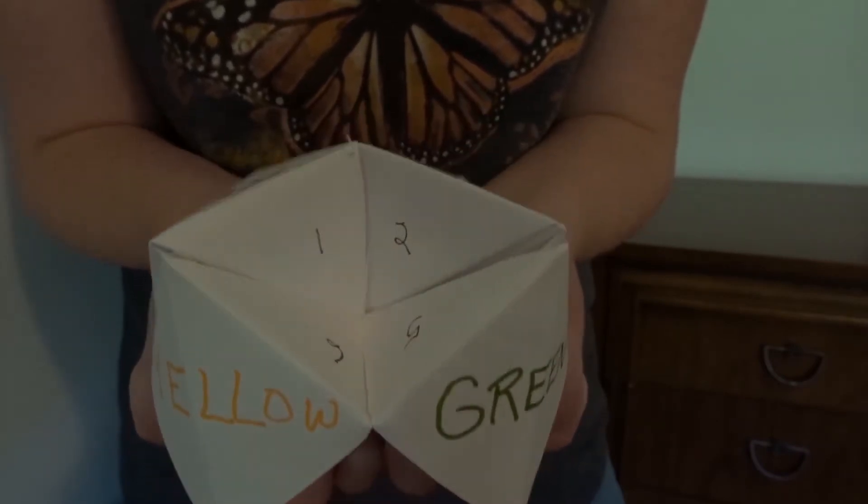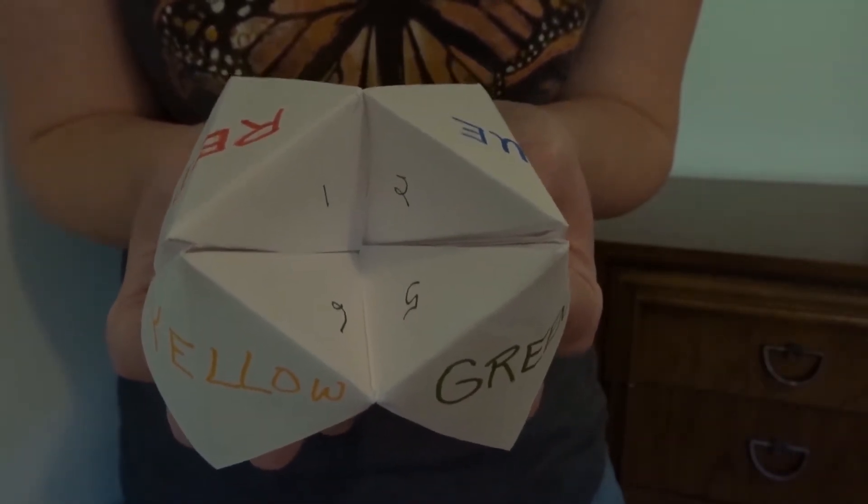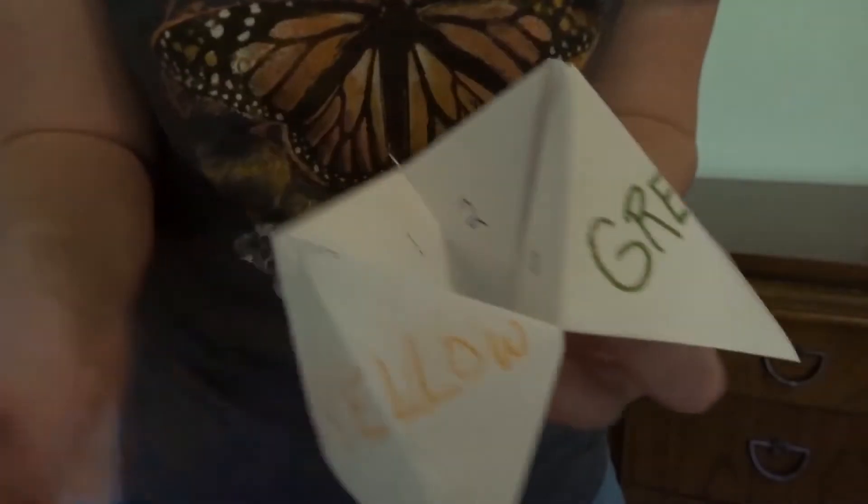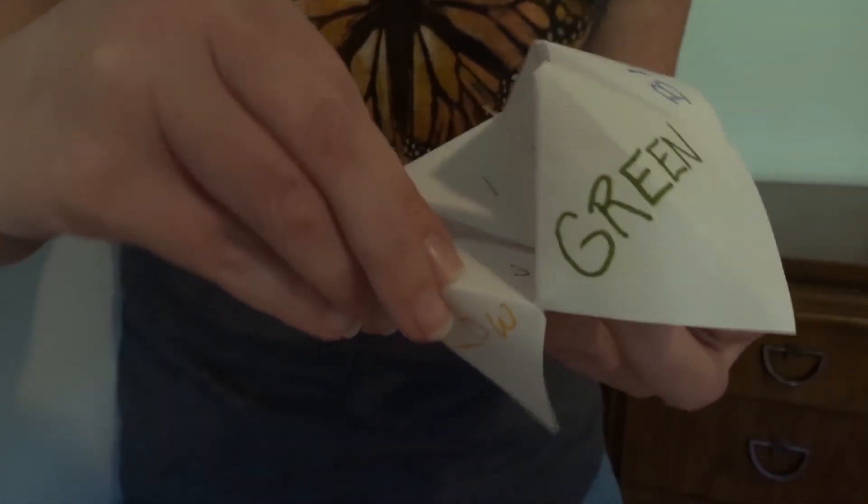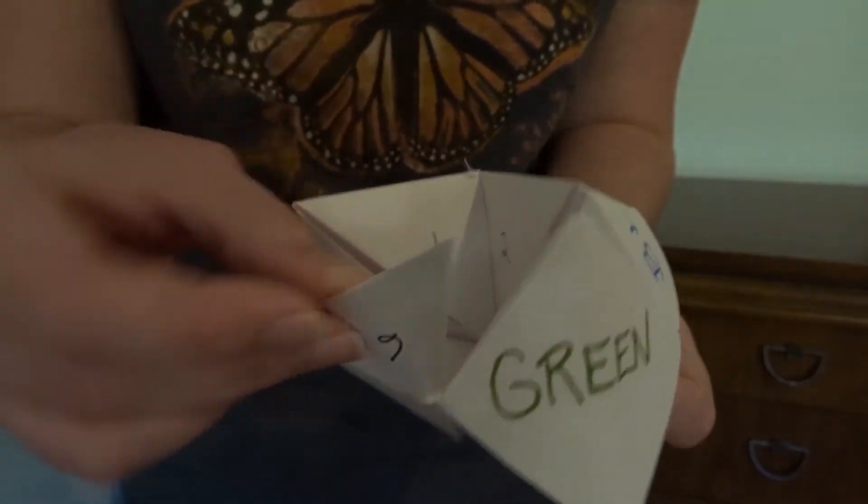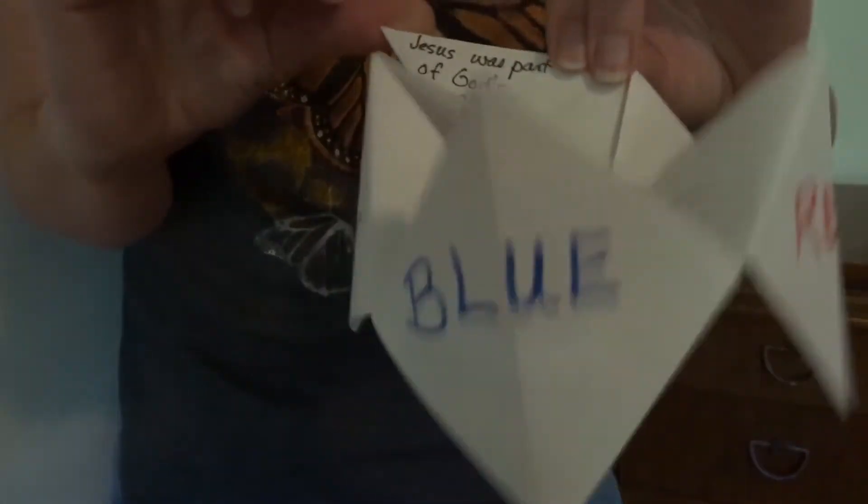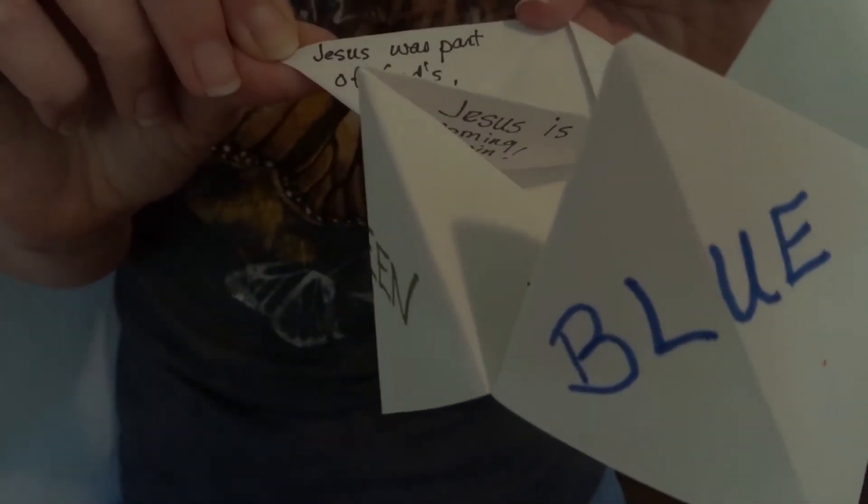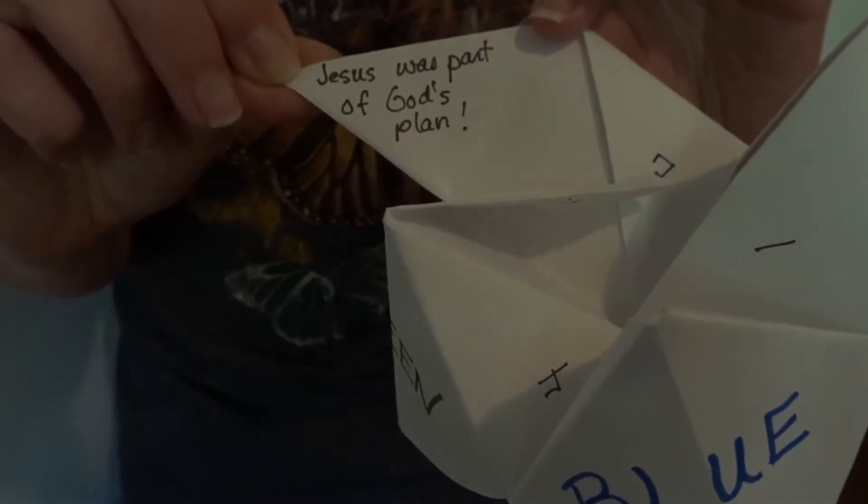And now you get to pick another number. Which one do you think? Let's go for the 6. In this case, we lift up the tab with the 6 and see what it says. And it says, Jesus was part of God's plan.